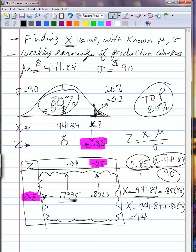That's 441.84 plus 76.50 for a total of 518.34. And those are in dollars, and that is the answer to this question. In order to be in the top 20% of wage earners, a production worker must make a weekly earnings of $518.34.